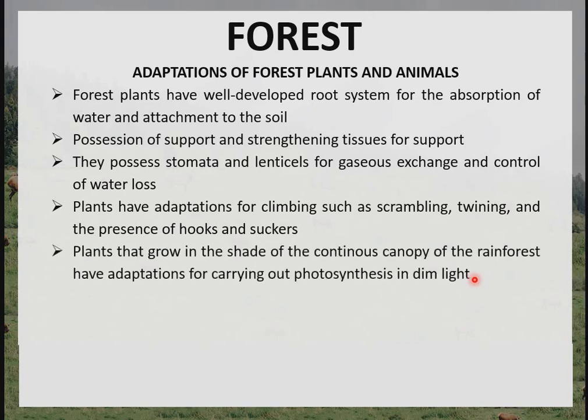Plants that grow in the shade of the continuous canopy of the rainforest have adaptations for carrying out photosynthesis in dim light. Because tall trees create a canopy, the small plants living under that canopy must have adaptations for carrying out photosynthesis with just a little sunlight.